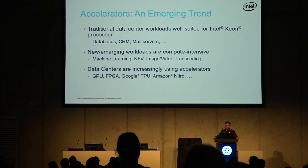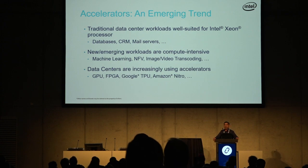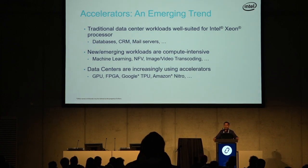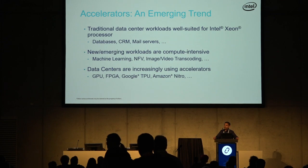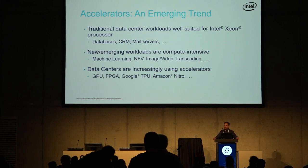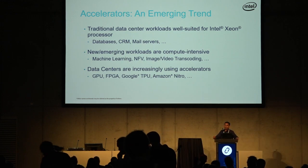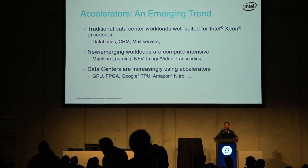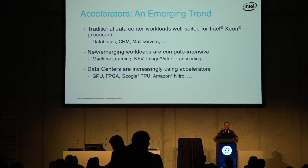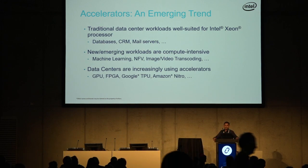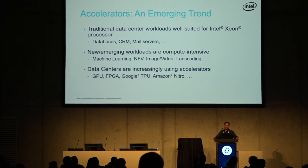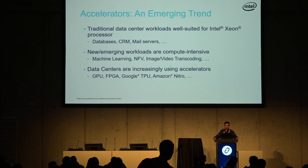For example, if you take machine learning or video transcoding or any other newer workloads, they tend to consume a lot of cycles. We can optimize Xeon by implementing new instruction sets like AVX, etc. But beyond a certain point, it's more performant and power efficient to offload this computation to other devices like GPUs, QuickAssist, or FPGAs.